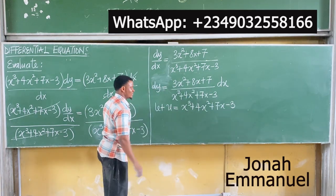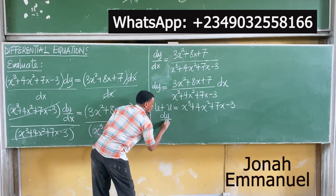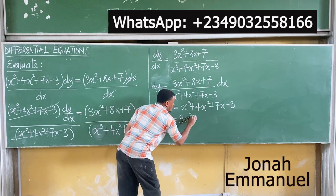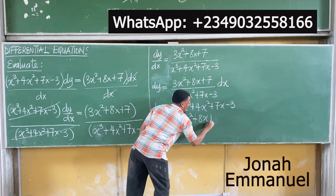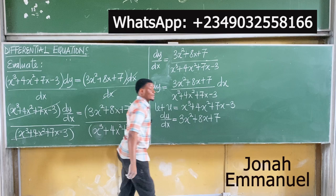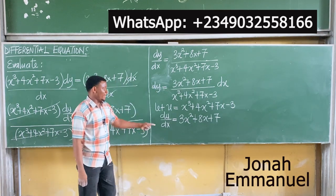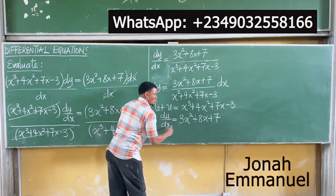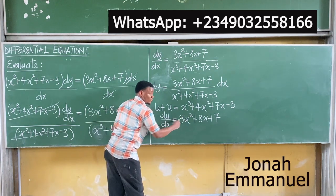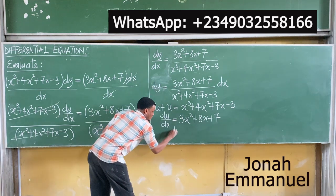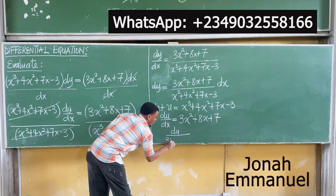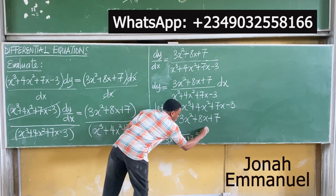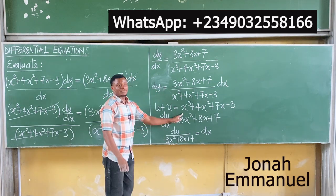Let's differentiate this. du/dx is equal to 3x squared plus 8x plus 7. Next, make dx the subject of the formula — these two will swap positions. So I'll have that du over 3x squared plus 8x plus 7 is equal to dx.